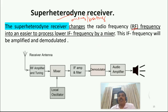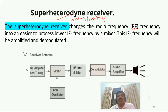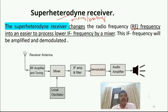By using a mixer — mixer means mixing or beating or heterodyne — the high frequency RF signal is converted into a low intermediate frequency (IF) signal. This IF signal will then be amplified and demodulated. That is what happens in the super heterodyne receiver. Any communication system has an antenna used for both transmission and reception.